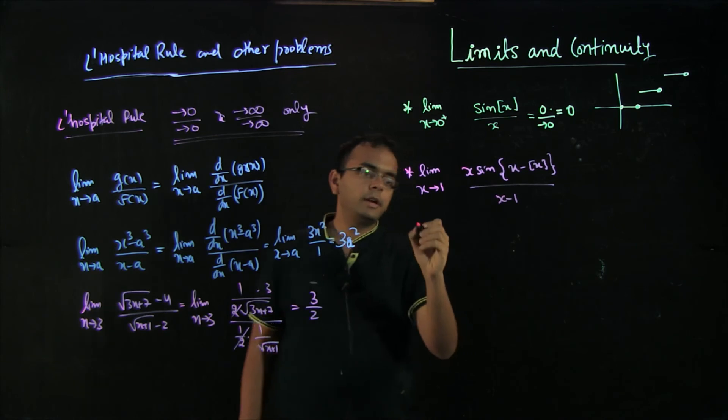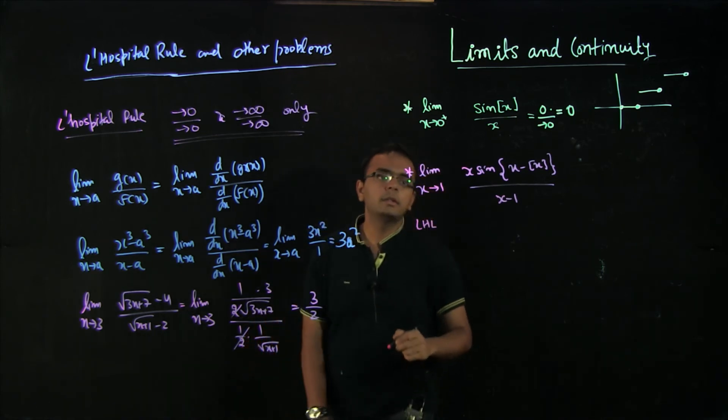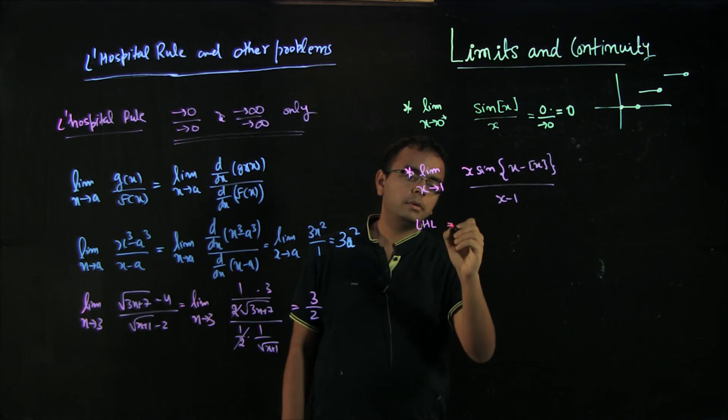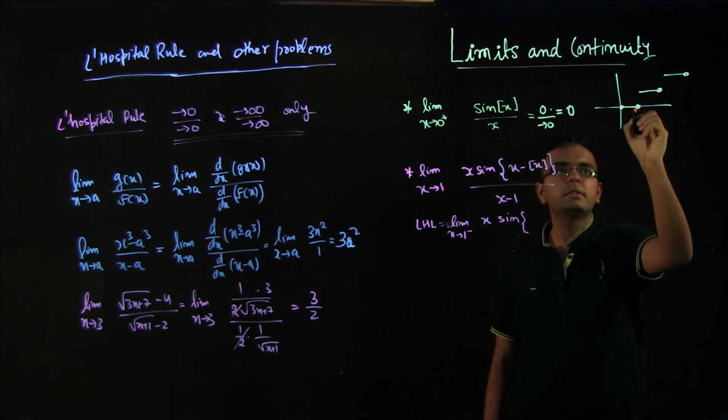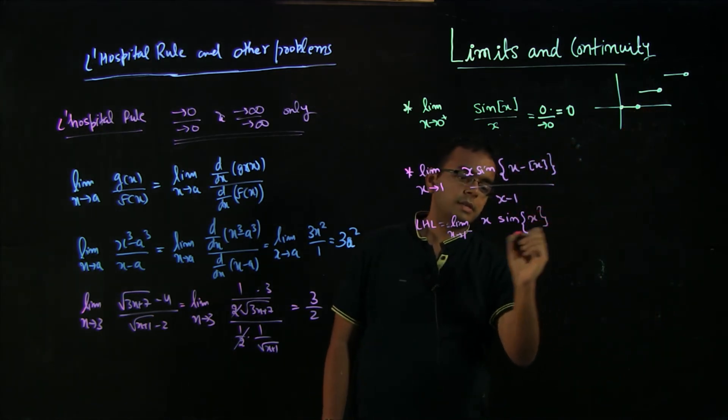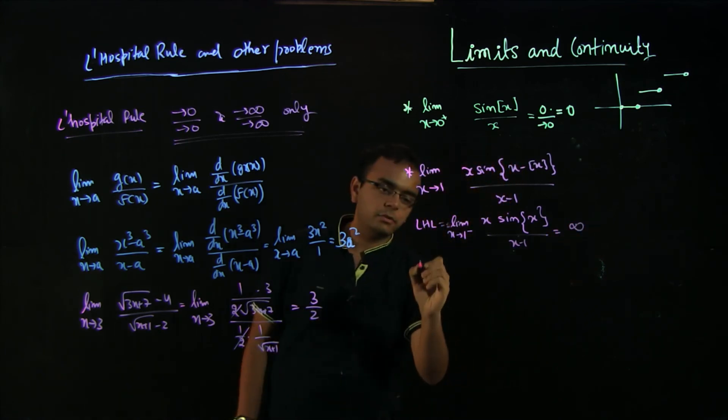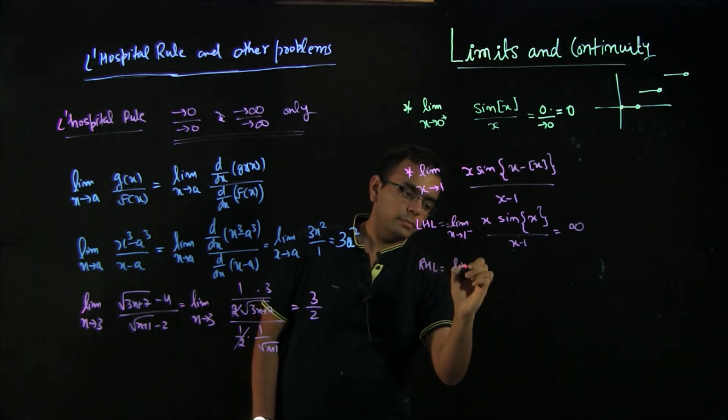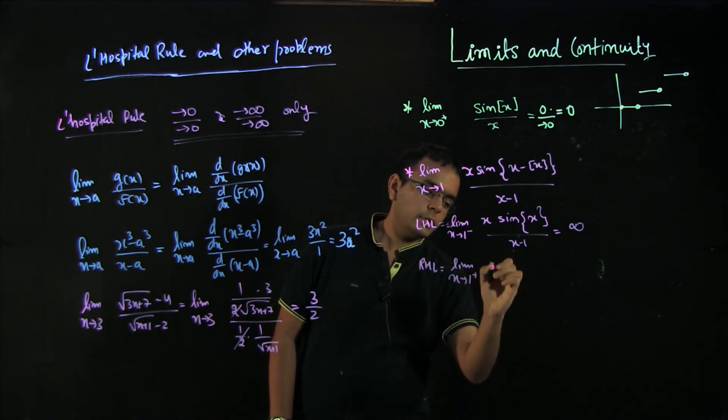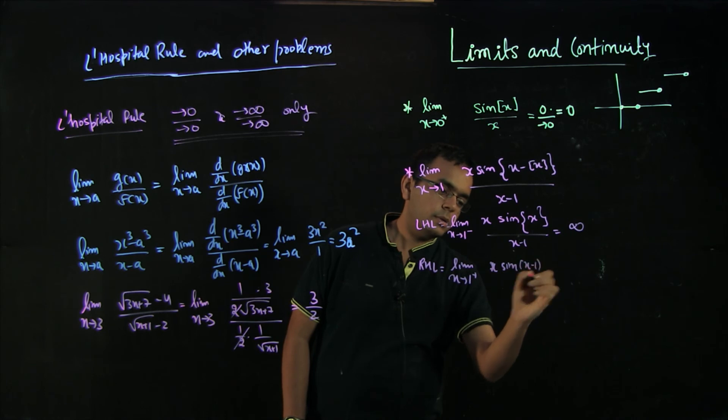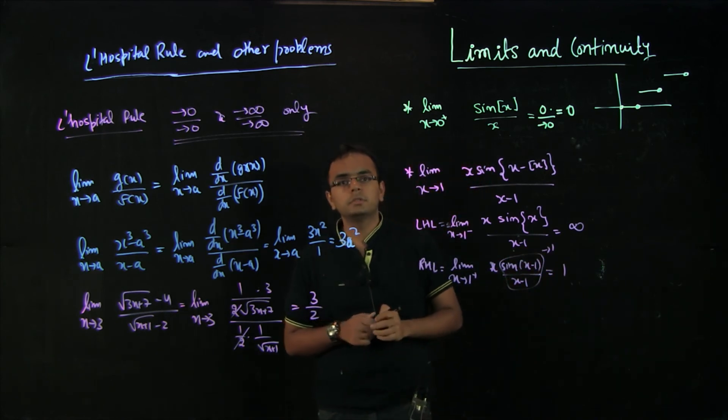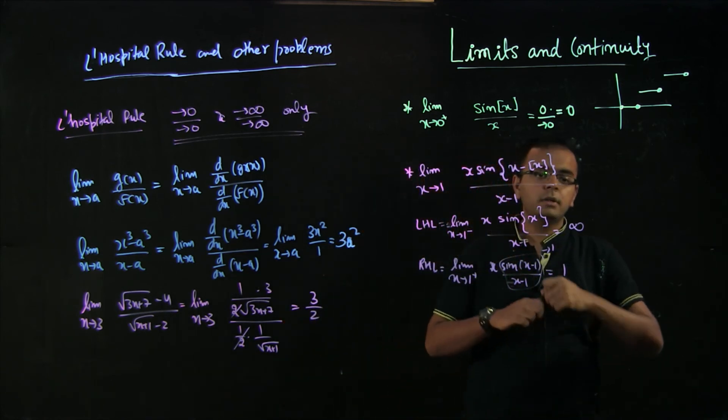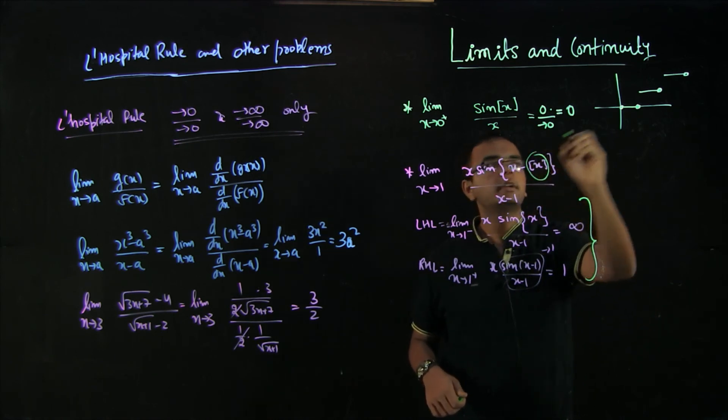This would become x sin x by x minus 1, and this will go to infinity. Whereas if you do right hand limit, this would be x sin x, 1 minus 1 by x minus 1, and this would become 1 and this is 1. The right hand limit and left hand limit are different because of this function which is greatest integer of x, and that has discontinuity in it.